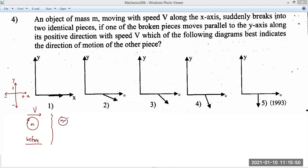One will be m by 2 and the other piece will also be m by 2 and one object is moving upwards. And it should be in the positive direction with velocity v. It's moving along the y-axis in the positive direction and the other mass now. They're asking about the other mass.